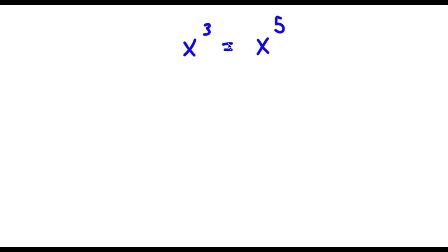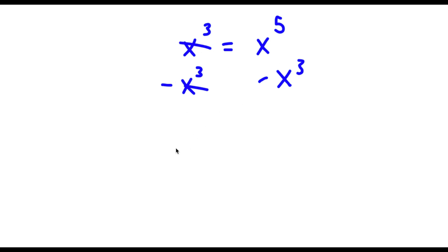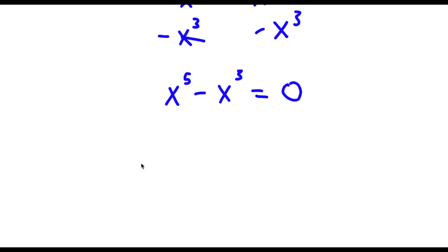So I have x to the power of 3 is equal to x to the power of 5. Now the first thing I'm going to do is subtract x to the power of 3 on both sides. So these two cancel out and I'm left with x to the power of 5 minus x to the power of 3 is equal to 0. So now I'm going to factor out x to the power of 3.